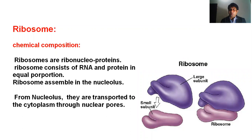The ribosome also contains ribosomal RNA. There are two forms of ribosome: some are freely dispersed in the cytoplasm, and some ribosomes are attached to the rough endoplasmic reticulum.